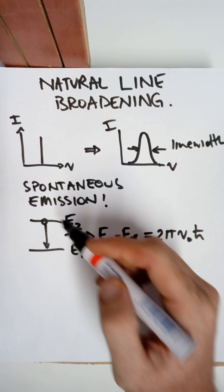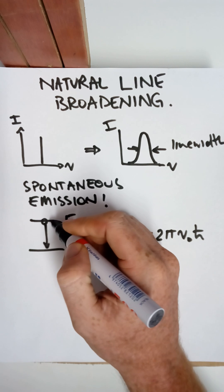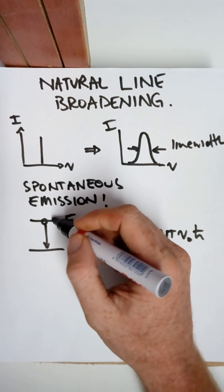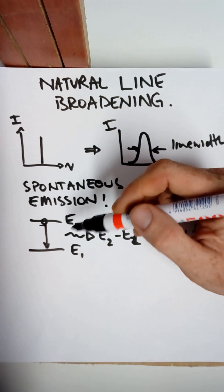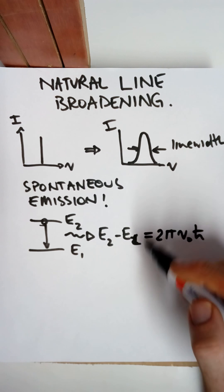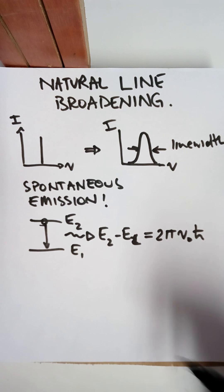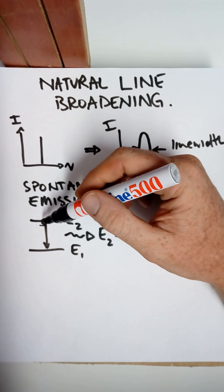You'll remember we also talked about some time constant that the population in this level, or the rate of change of population of electrons in this level was proportional to the actual population itself. And the constant of proportionality, we gave it some time constant. So it was an idea that electrons have some lifetime in this upper energy state.